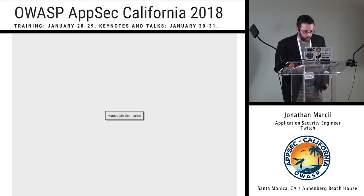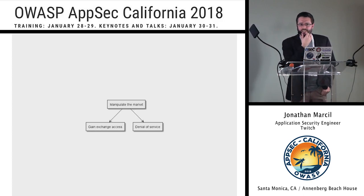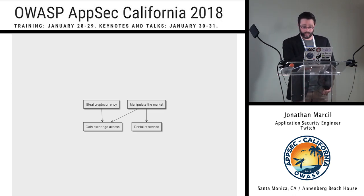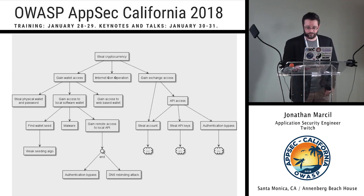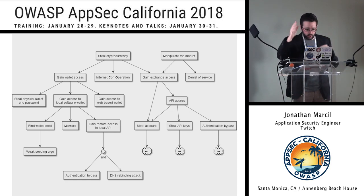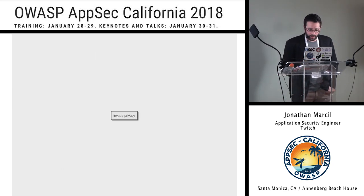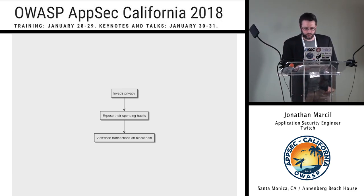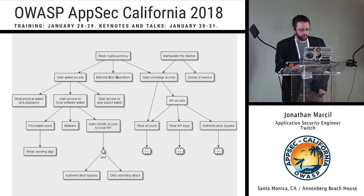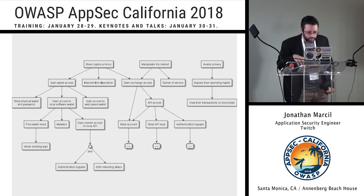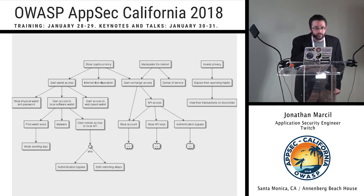Another goal is to manipulate the market. How do you do that? You can do a denial of service or you can gain exchange access — which is literally the same action I had before when doing steal cryptocurrency. So I just plug it in from the diagram I had before and add manipulate the market on top. The reusability of attack trees is awesome. Another goal is invade privacy. If I dig into that, I can expose the spending habits of people. How? I can view their transactions on the blockchain. I'm not super tempted to link it with anything here, so I just add it on the side — I probably won't dig on that because it's not the focus. The focus is APIs around access and maybe the software wallet.